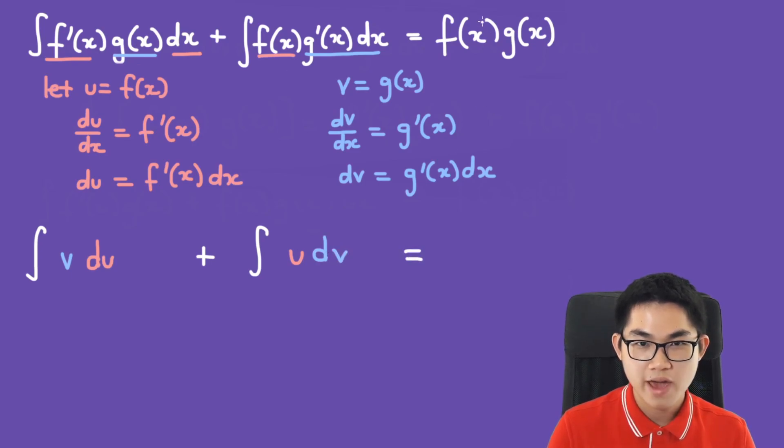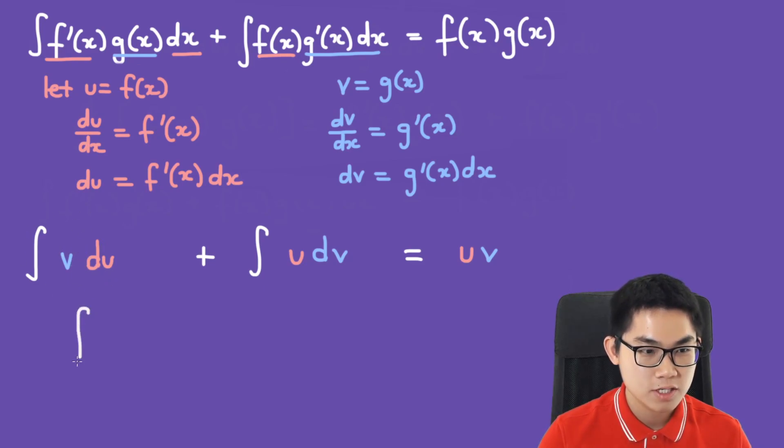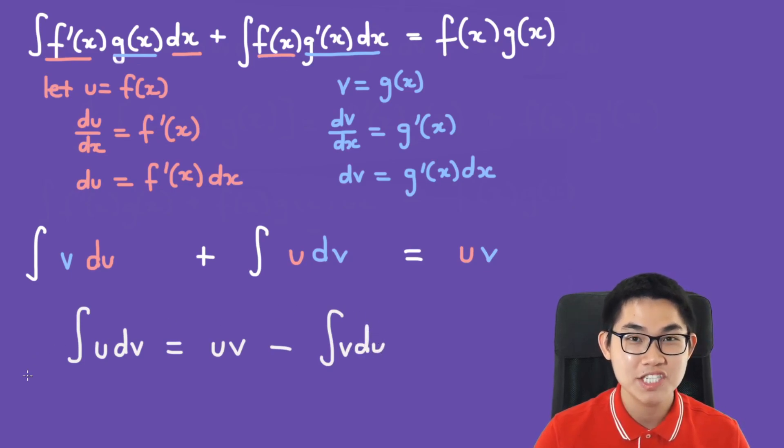Last but not least, we subtract both sides by the integral of v du. So the integral of u dv is equal to u times v minus the integral of v du, and this here is essentially our integration by parts formula.